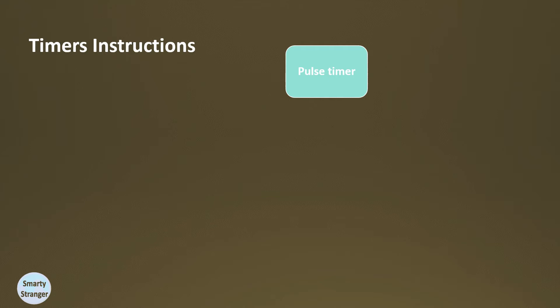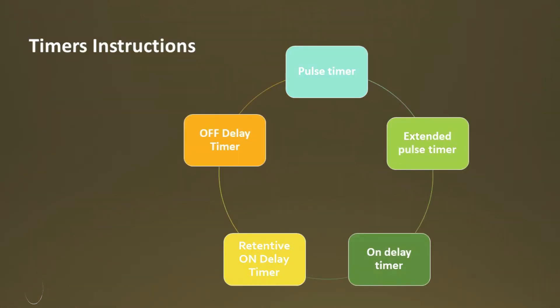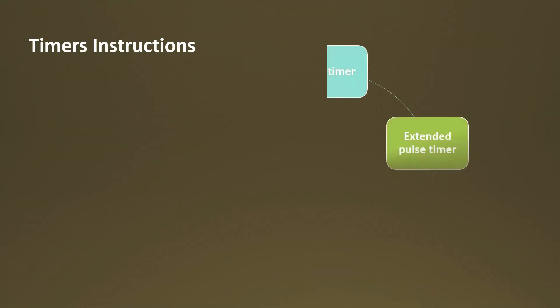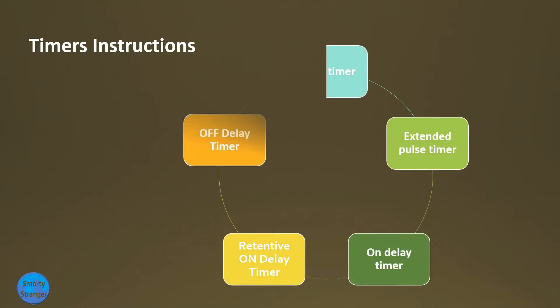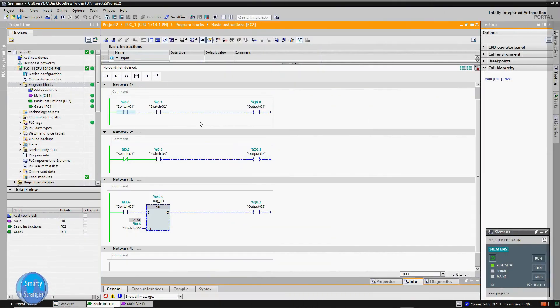In PLC programming, different types of timers are used: Pulse timer, Extended pulse timer, On delay timer, Retentive or extended on delay timer, Off delay timer, and others. First we will take a look at these different types of timers, then try to understand them by inserting them in a PLC program, and after simulation we will check their behavior.